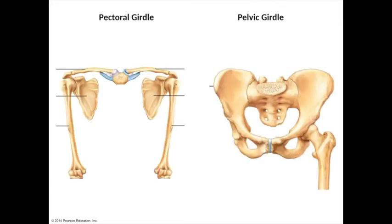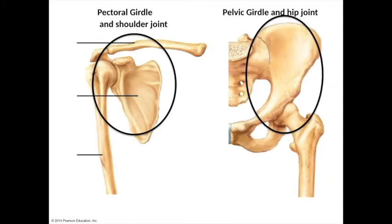The upper limbs are attached to the axial skeleton through the pectoral girdle, whereas the pelvic girdle secures the lower limbs. The upper and lower limbs differ in their function, but they share the same basic structural plan.